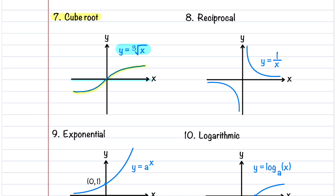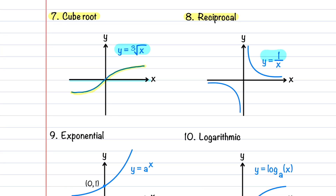The eighth function is the reciprocal function, described by the equation y = 1/x. It's not defined at x = 0 and has an asymptote there. It is only defined for x > 0 and x < 0. It has two branches — one in the first quadrant and one in the third quadrant — and it is an odd function, symmetric about the origin.